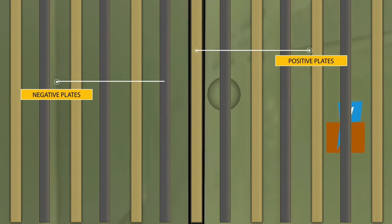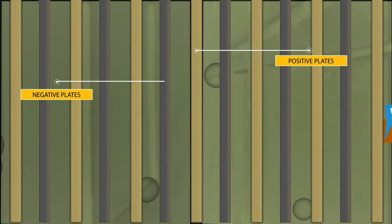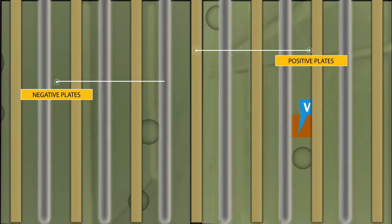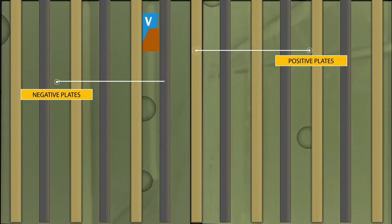The sulfate ions move to the negative plates and give up their negative charge. The remaining sulfate combines with the active material on the plates to form lead sulfate. This reduces the strength of the electrolyte, and the sulfate on the plates acts as an electrical insulator.